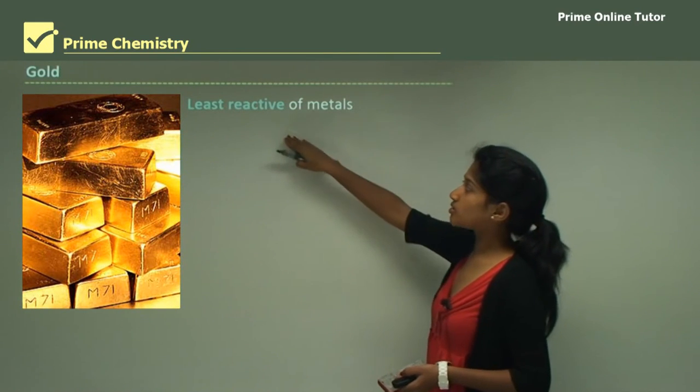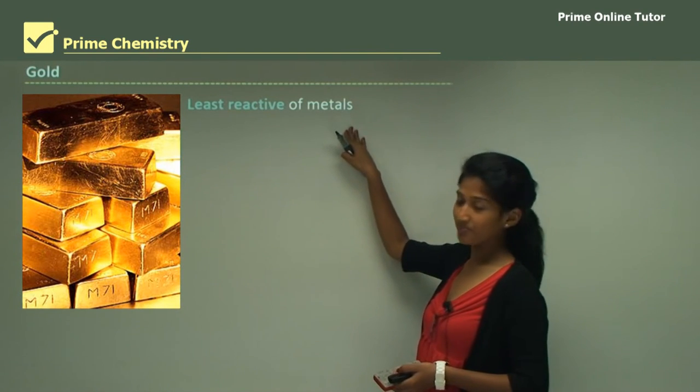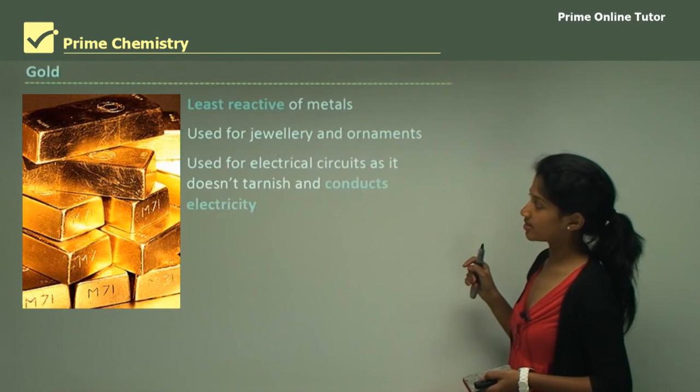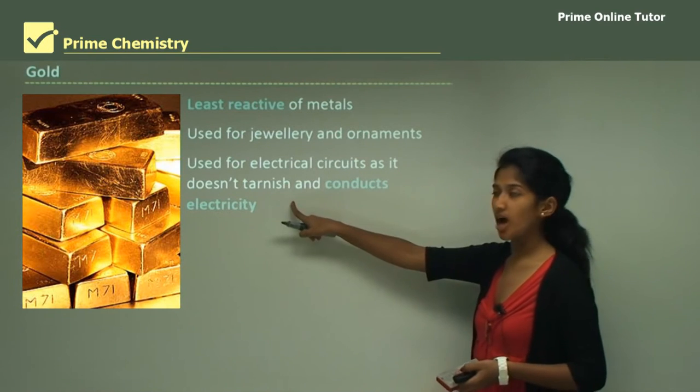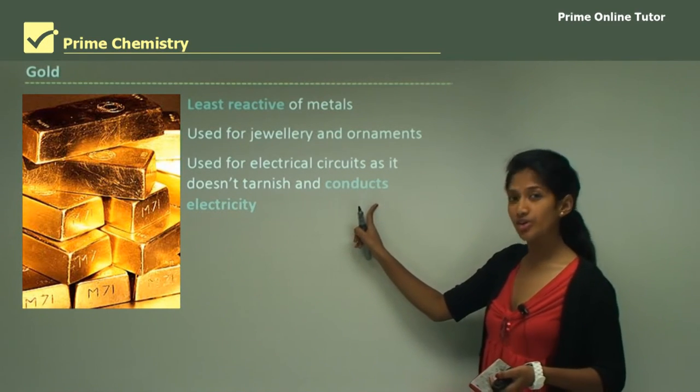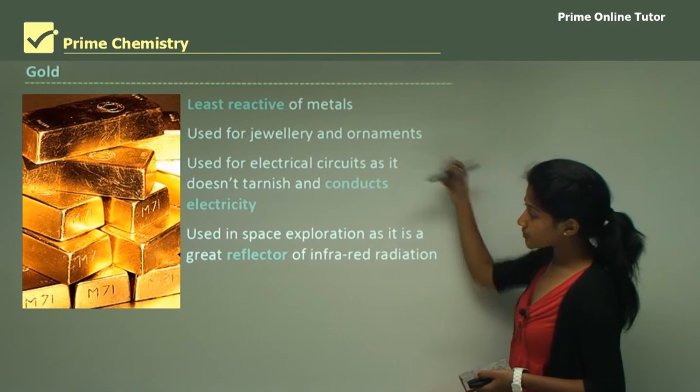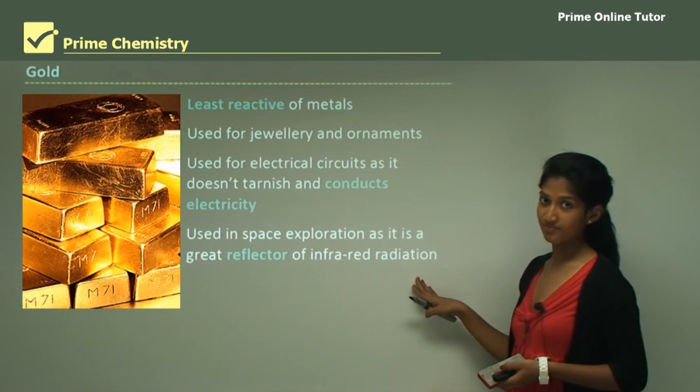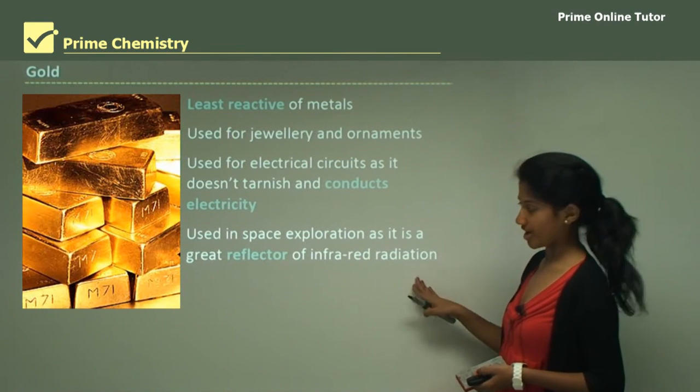Gold has quite low reactivity. It's actually the least reactive of metals. It's mainly used for jewelry and ornaments. It's used for electrical circuits as well, mainly because it doesn't tarnish, because it doesn't react with oxygen and also because it's very good at conducting electricity. It's used for space exploration as it is a great reflector of infrared radiation.